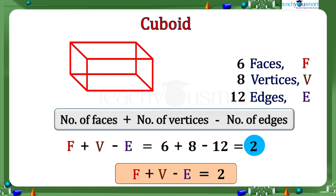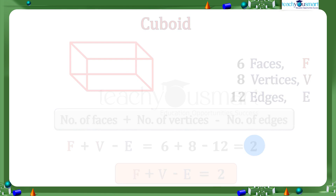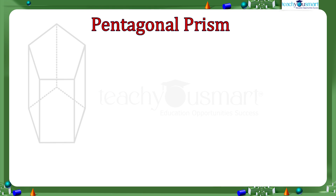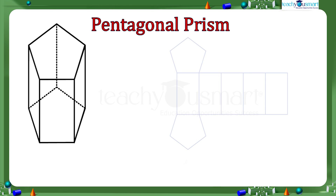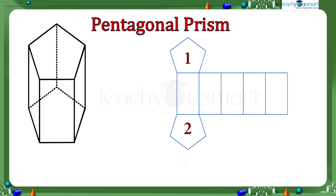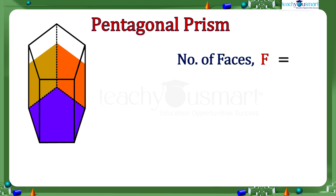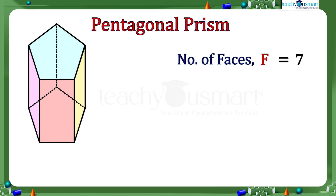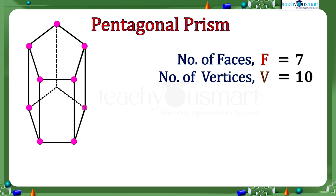Let's see if this relation is true for another convex polyhedron. Consider a pentagonal prism. A pentagonal prism is a prism that has two pentagonal bases and five rectangular sides. Here the number of faces is 7, the number of vertices is 10, and the number of edges is 15.